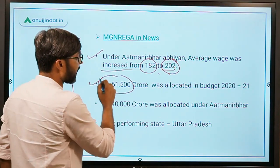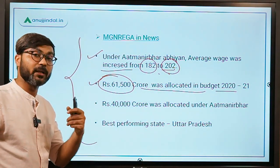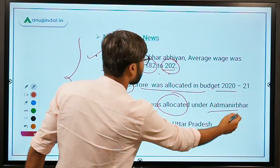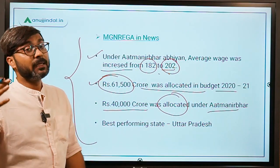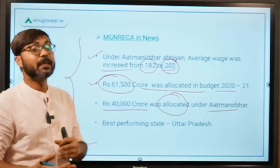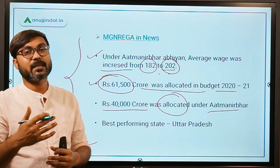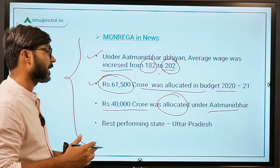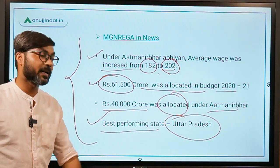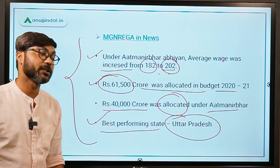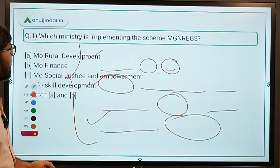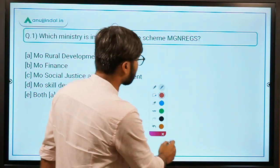Rupees 61,500 crores were allocated in this year's budget 2020-21 for MNREGS. The best performing state in providing employment under MNREGS is Uttar Pradesh, which has provided more than 57 lakh employment opportunities.